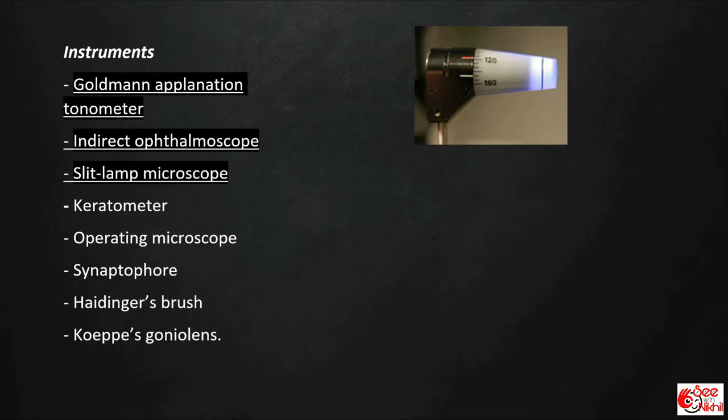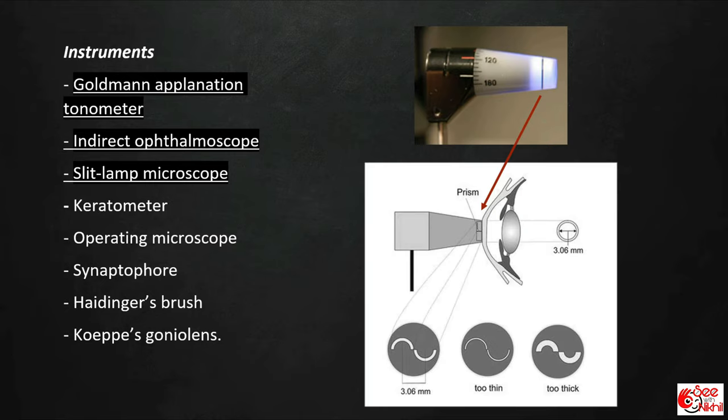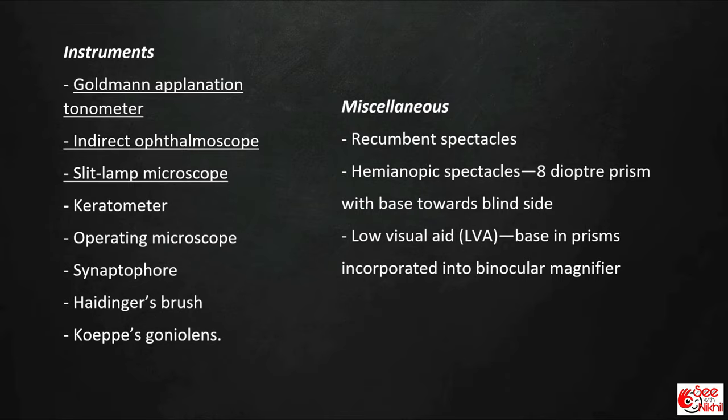Prisms can also be used along with Maddox rod for subjective measurement of deviation, and they have many other diagnostic and therapeutic uses. Many instruments also use prisms — for example, the Goldmann applanation tonometer, in which the circular area of contact is converted into two semi-circles using a prism. Other instruments like indirect ophthalmoscopes and slit lamps also use prisms. They are also used in hemianopic spectacles and low vision aids.